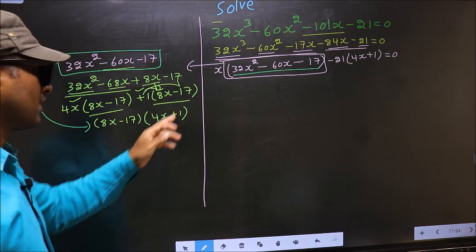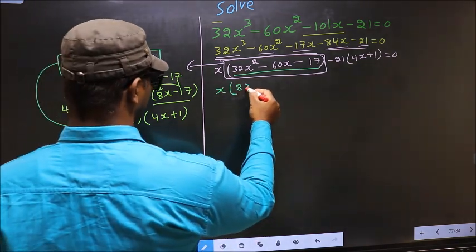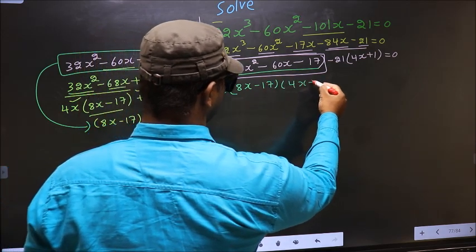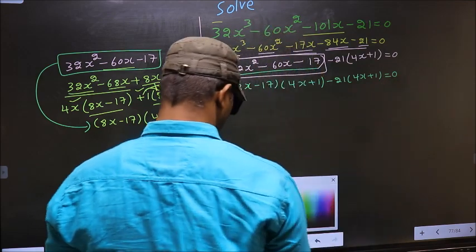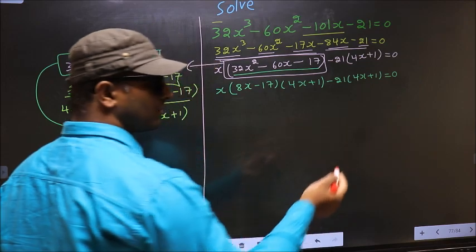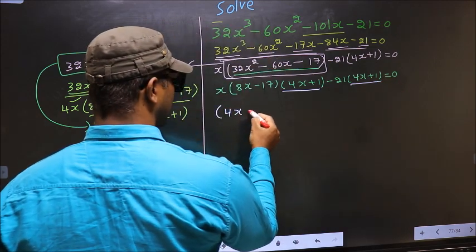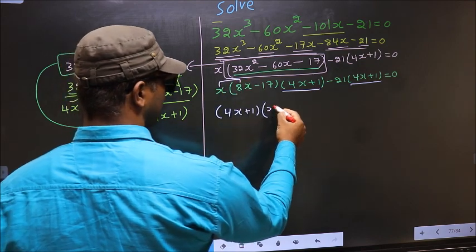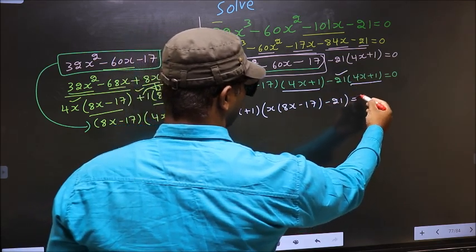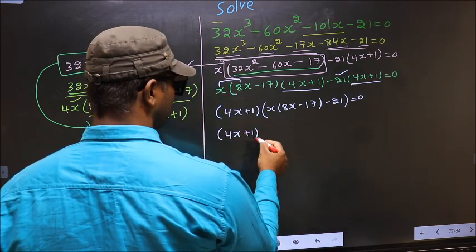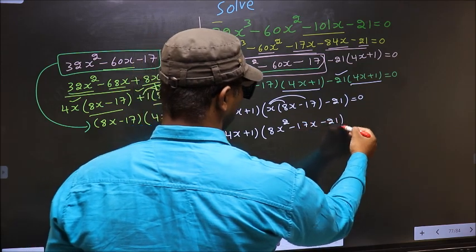In place of the quadratic, we write the factors. So this equation changes to x times (8x minus 17)(4x plus 1), with no change over here, equal to 0. From this entire equation, take out (4x plus 1) as common. We are left with x times (8x minus 17) minus 21, equal to 0. Opening the brackets gives 8x² minus 17x minus 21 equal to 0.